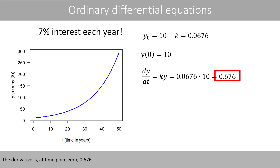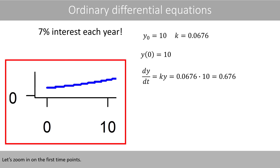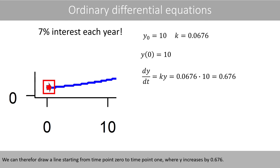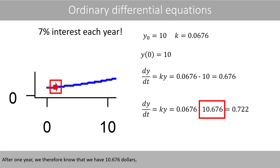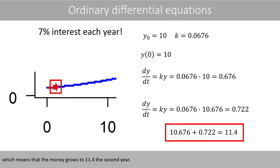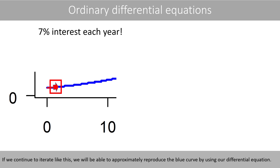The derivative at time point zero is 0.676. Zooming in on the first time points, this number tells us that our money increases from $10 to $10.676. We can draw a line that starts from time point zero to time point one, where y increases by 0.676. After one year we have $10.676, and the derivative at year one is now 0.722, which means the money grows to $11.40 in the second year. If we continue to iterate like this, we will be able to approximately reproduce the blue curve using our differential equation.